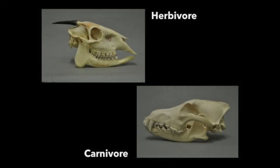When we compare herbivore and carnivore skulls, we see differences in the hinge formed at the TMJ and the location of the teeth line. Typically, the TMJ is higher above the teeth line in herbivores than in carnivores.